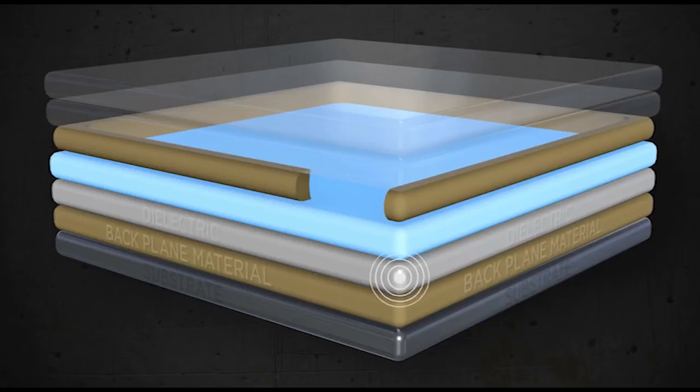Next is our dielectric. The dielectric does two very important things. First, it acts as insulation and is applied over the entire backplane evenly and consistently to ensure there is no burning or shorting. Secondly, it assures the current is being distributed evenly across the surface to produce even light.